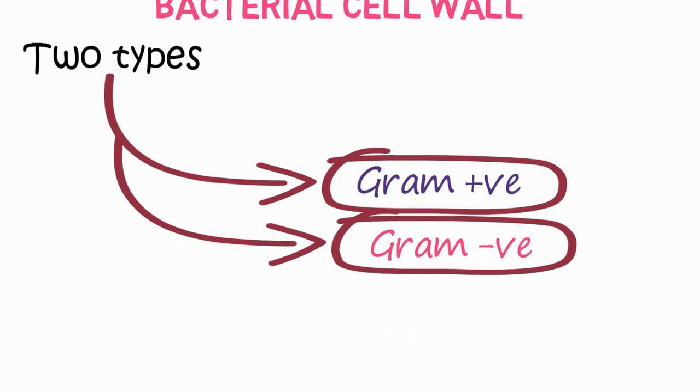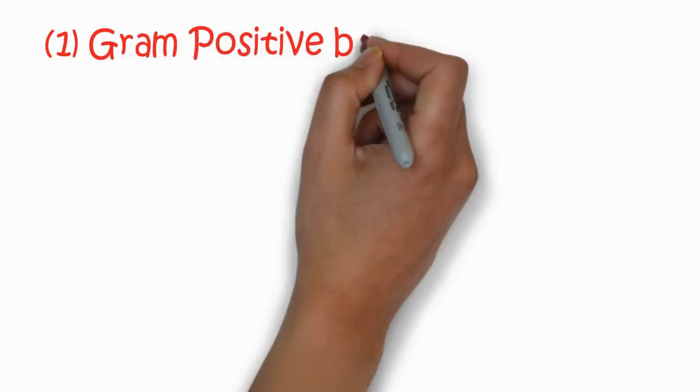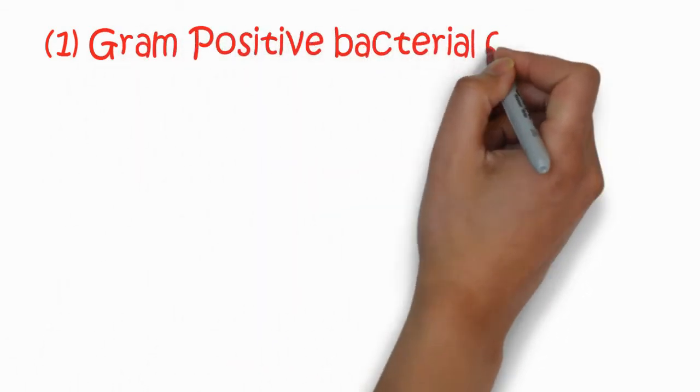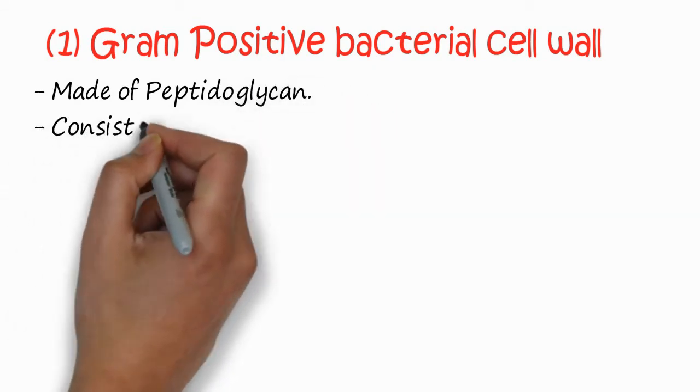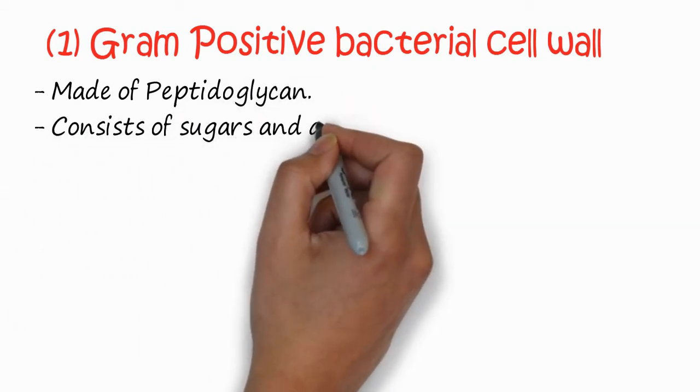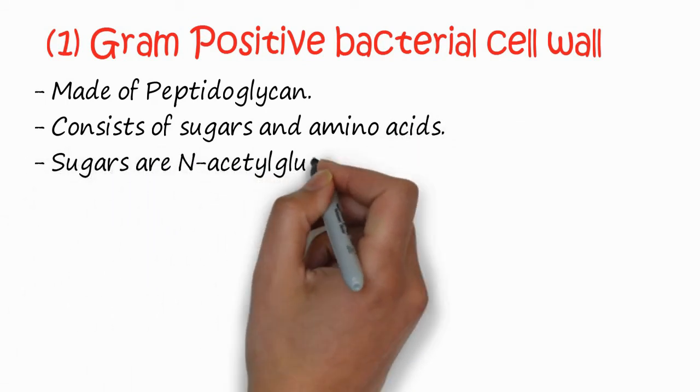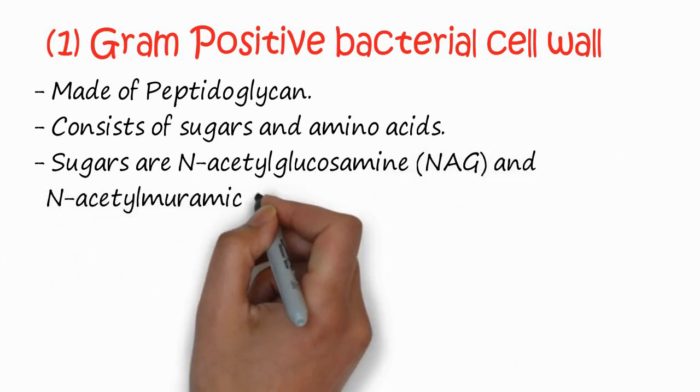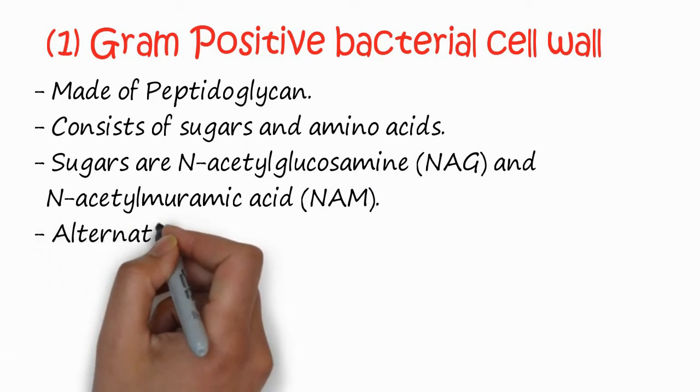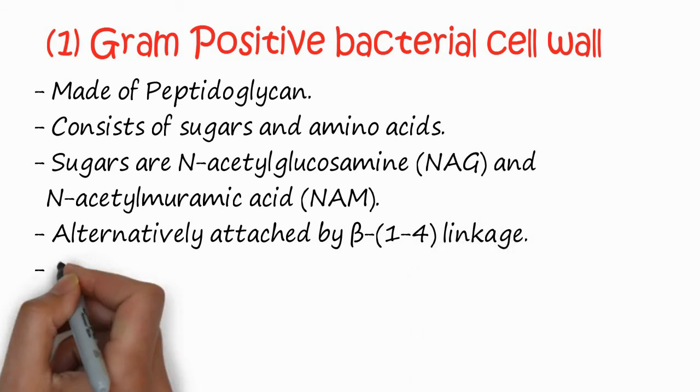The first type of bacterial cell wall is gram positive bacterial cell wall. This type of cell wall is made of peptidoglycan. It is made of sugars and amino acids. Sugars are N-acetyl glucosamine, called NAG, and N-acetyl muramic acid, called NAM. These two types of sugar units are attached alternatively by beta-1-to-4 glycosidic linkage.